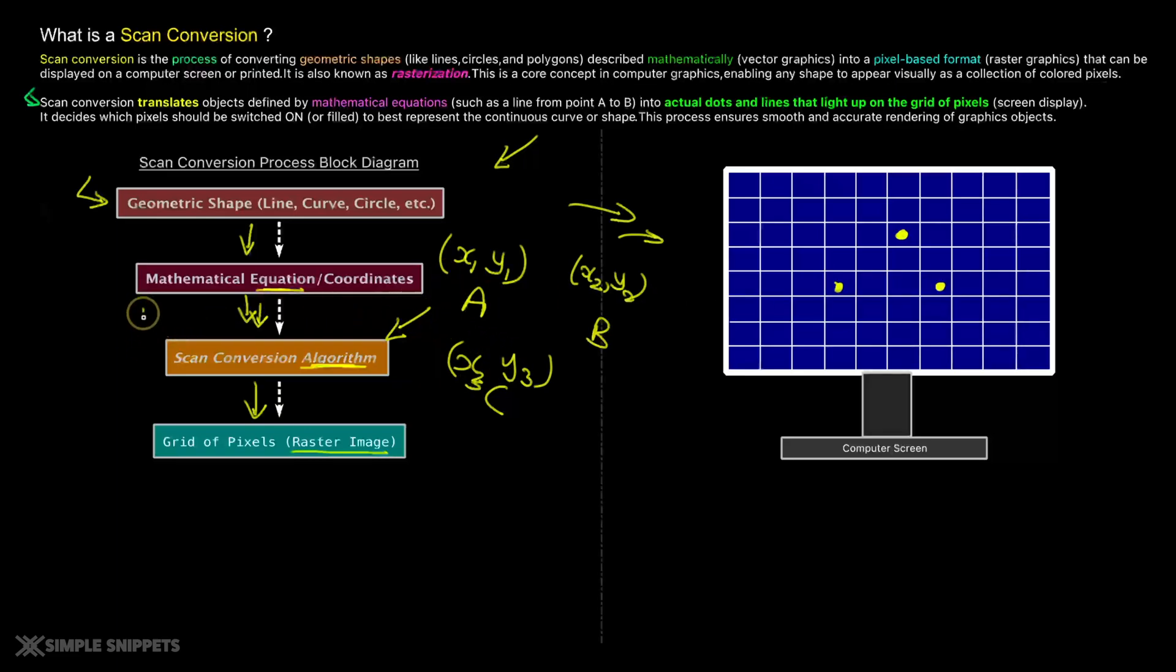When you have these points, there will be some scan conversion algorithm that will plot them and it will figure out, the algorithm will figure out that between point A and point B, you have one pixel to light up. So you will light up this pixel also and create a line like this. Same for B and C.